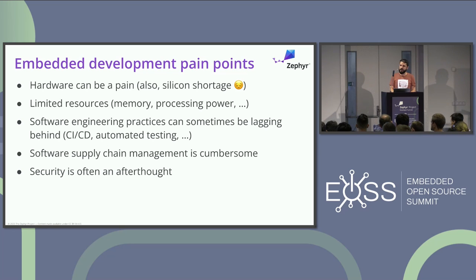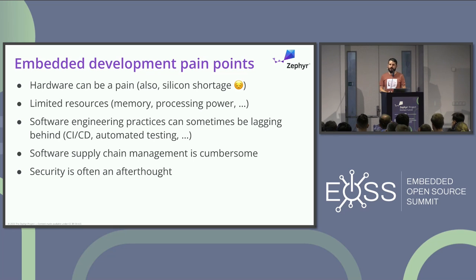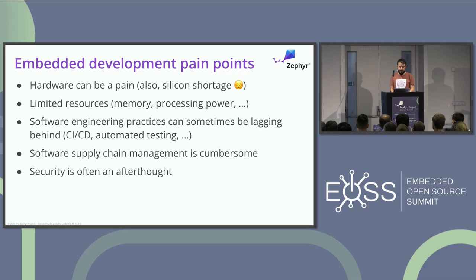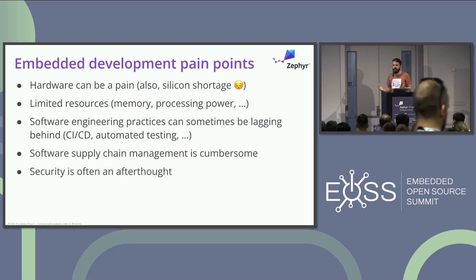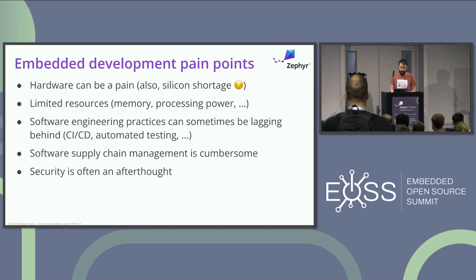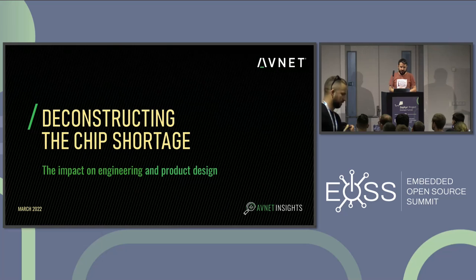Managing the provenance of your software, especially if you end up putting open source bits and third-party libraries into your embedded system — how can you manage that efficiently? And security of course: the S in IoT stands for security, right? We all know that, and again there are some tools there.